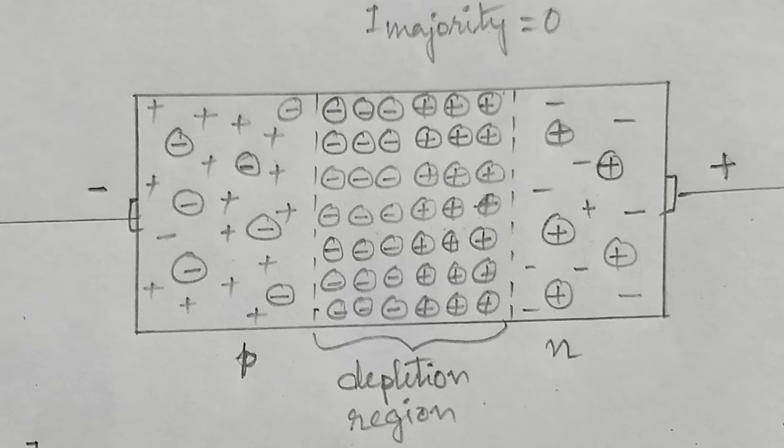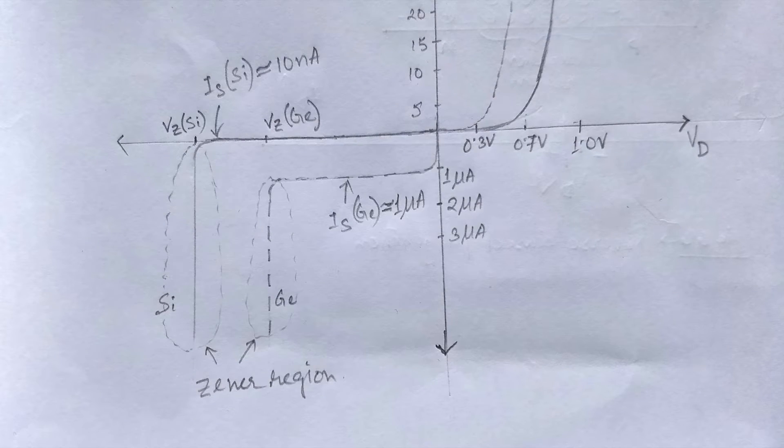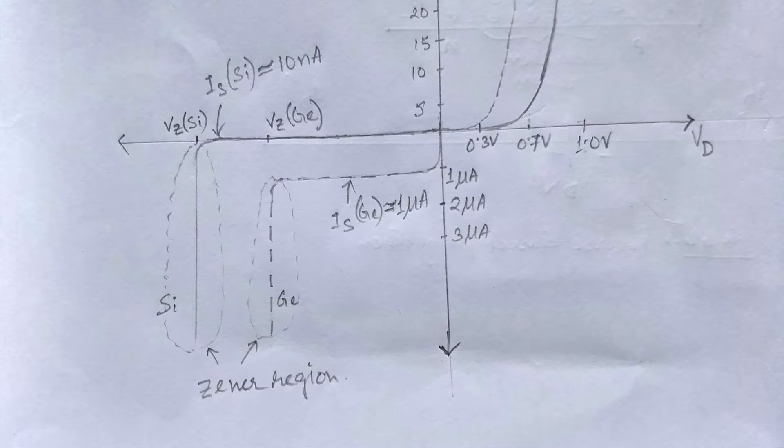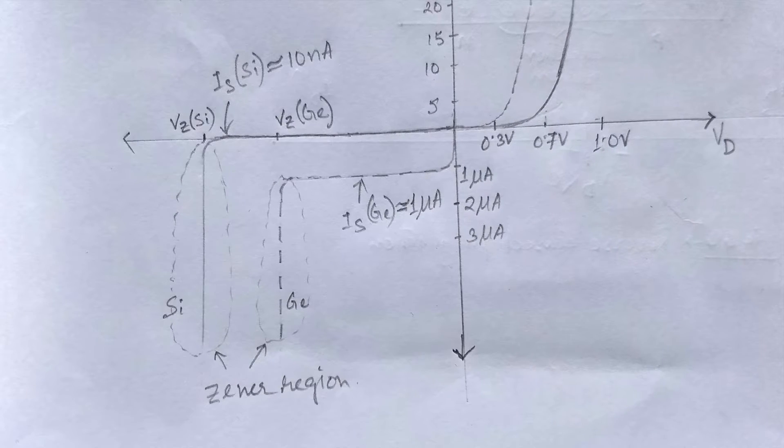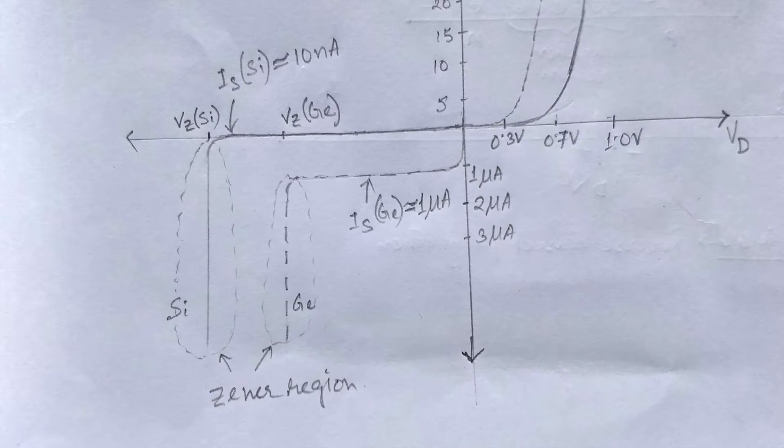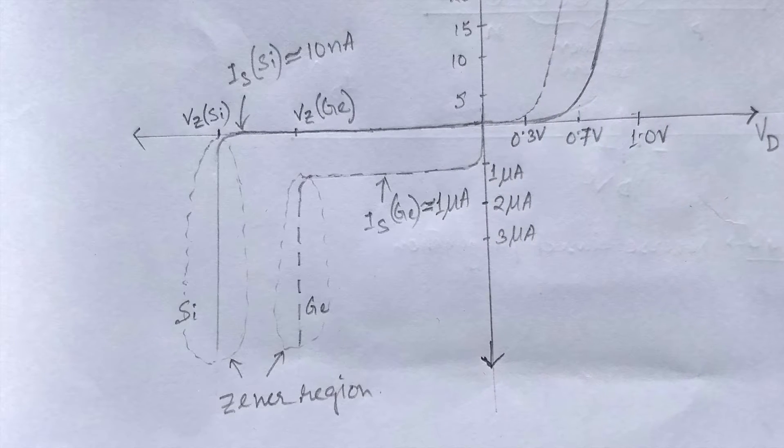The reverse bias voltage or Zener breakdown voltage depends on doping concentration. The maximum reverse bias voltage that can be applied to a PN junction before entering the Zener region is called peak inverse voltage denoted by PIV, or peak reverse voltage denoted by PRV.